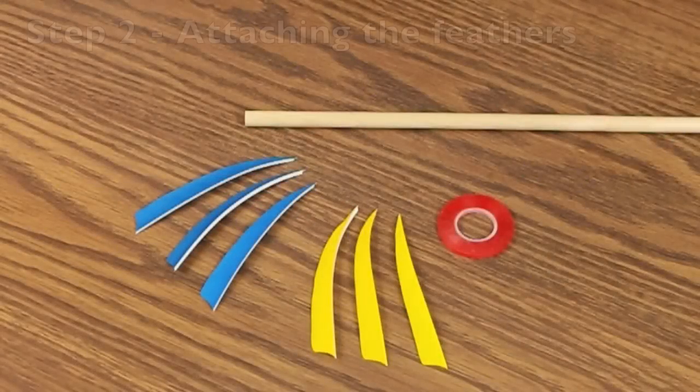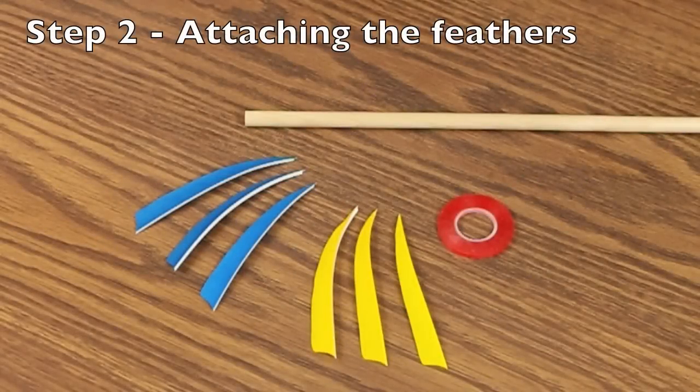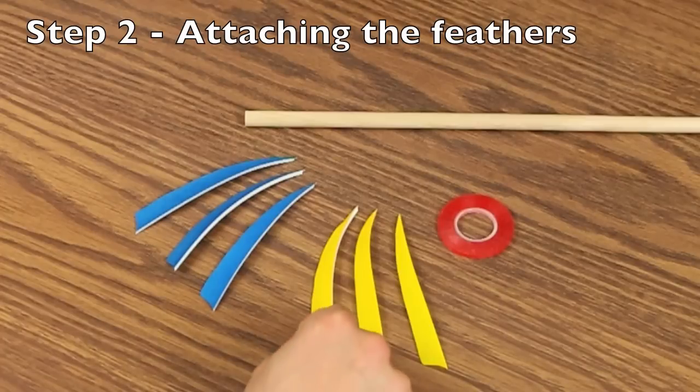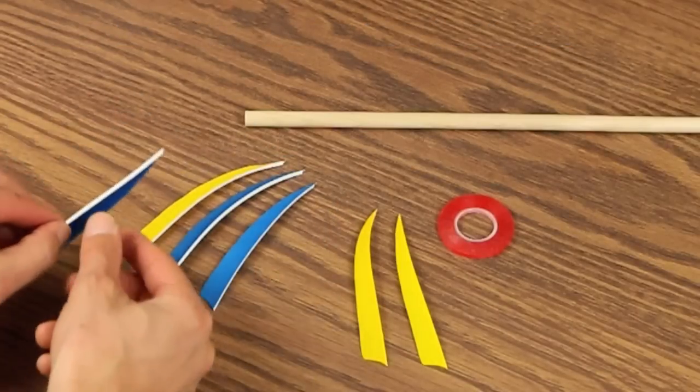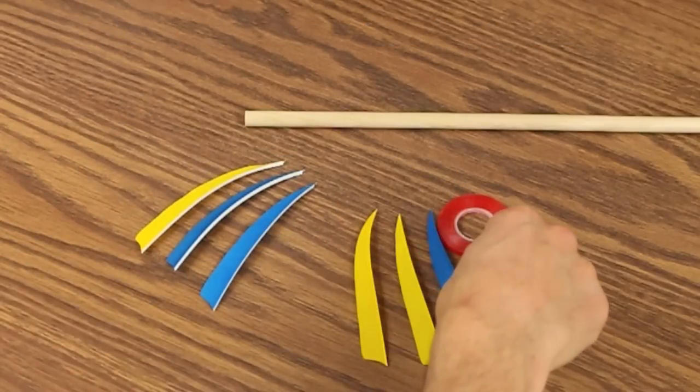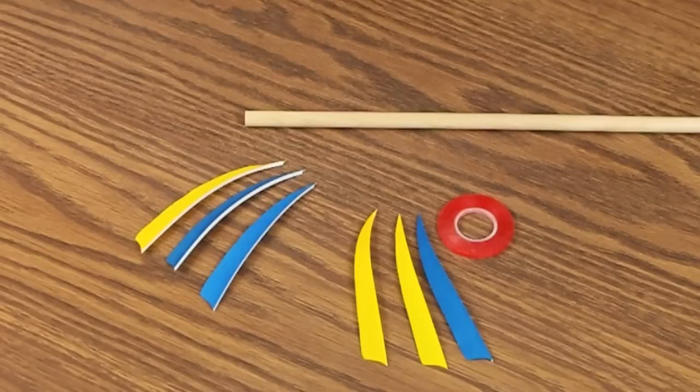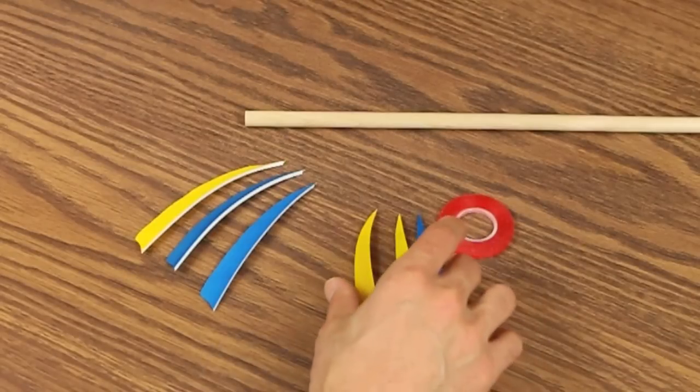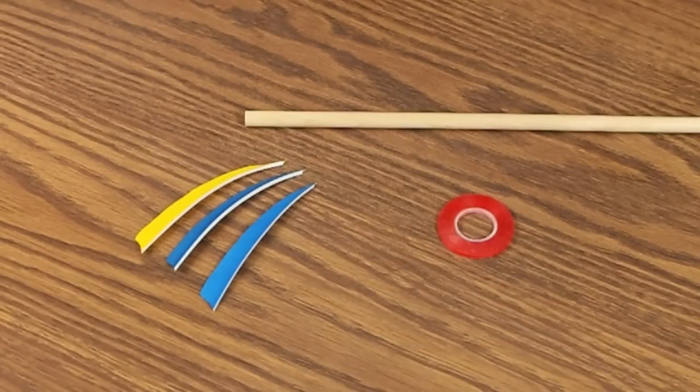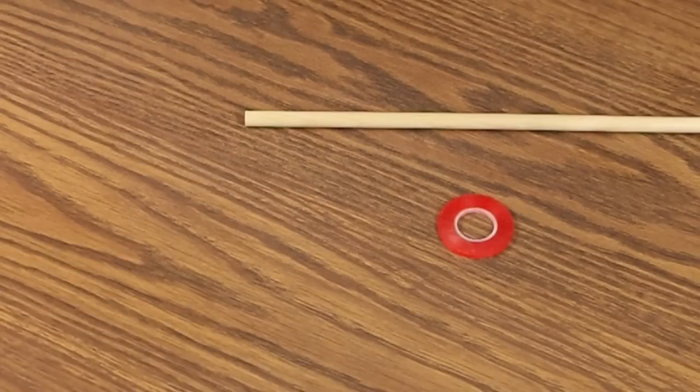The next step is to apply the feathers. This is a kit for two arrows, so we have six feathers, three for each. The first thing you're going to do is align them so you've got two of one color and one of the other in each of the groups. Once you've done that, you're ready to go. These will be for our first arrow, so we'll get those out of the way for the moment.